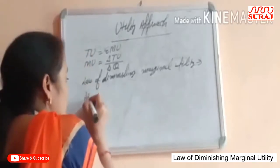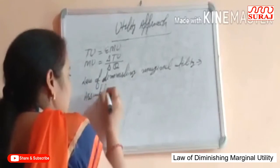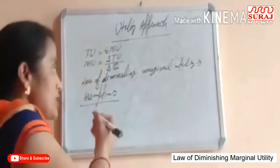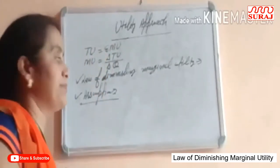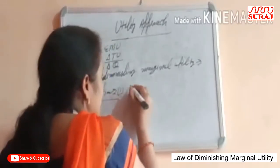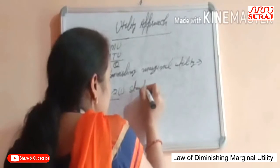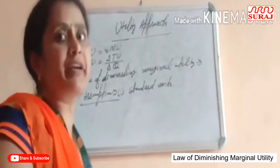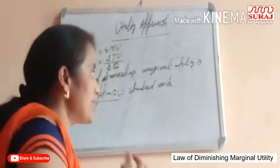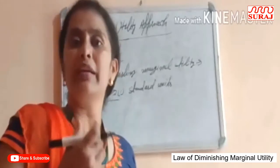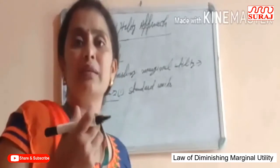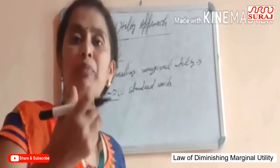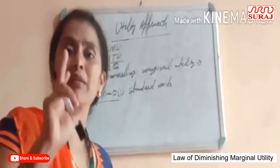This law is also based on assumptions, meaning some factors are constant. On this basis, the law can be applied. The first assumption says the consumer consumes standard units of the commodities — a complete unit. For example, if he consumes bread, it means it is related to the complete bread, not just a bite. This is counted as the first unit.